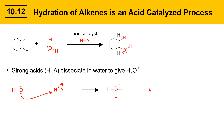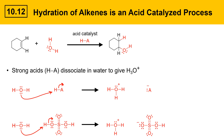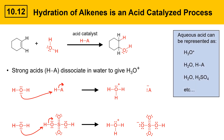Any strong acid reacts with water to give H3O+. Here's a specific example: sulfuric acid reacting with water. Water is protonated by sulfuric acid to give hydronium ion and hydrogen sulfate counter ion. The point is that aqueous acid can be represented in different ways — sometimes H3O+, sometimes water with a generalized acid HA, and sometimes a specific acid like sulfuric acid, H2SO4.